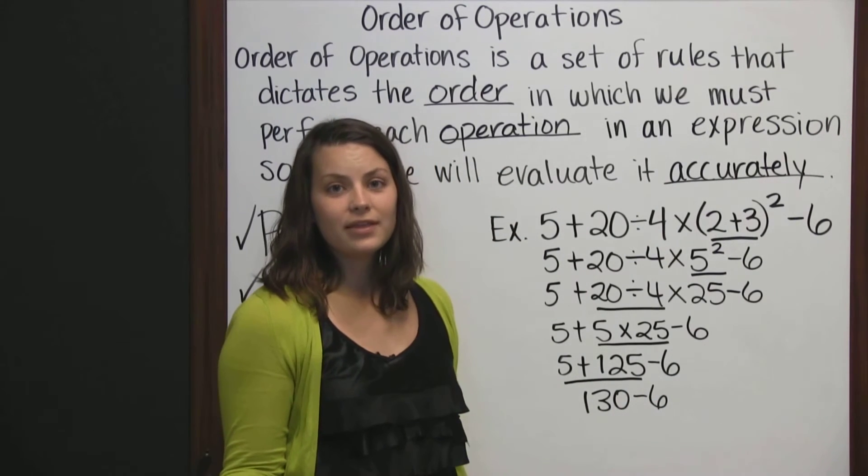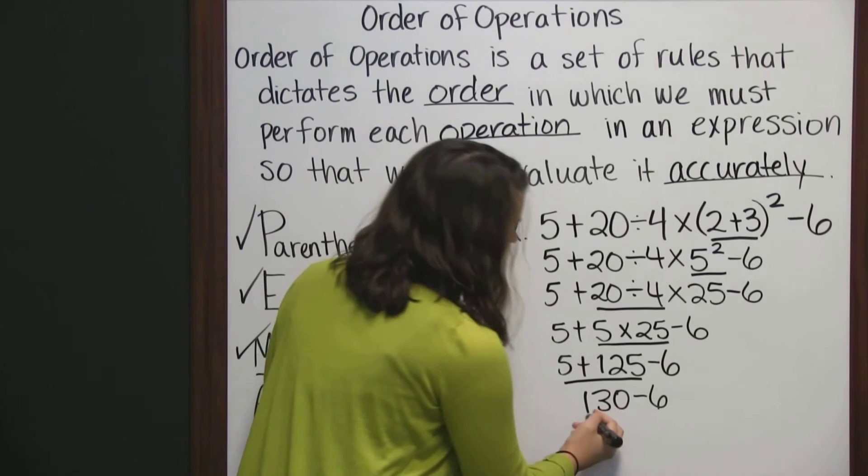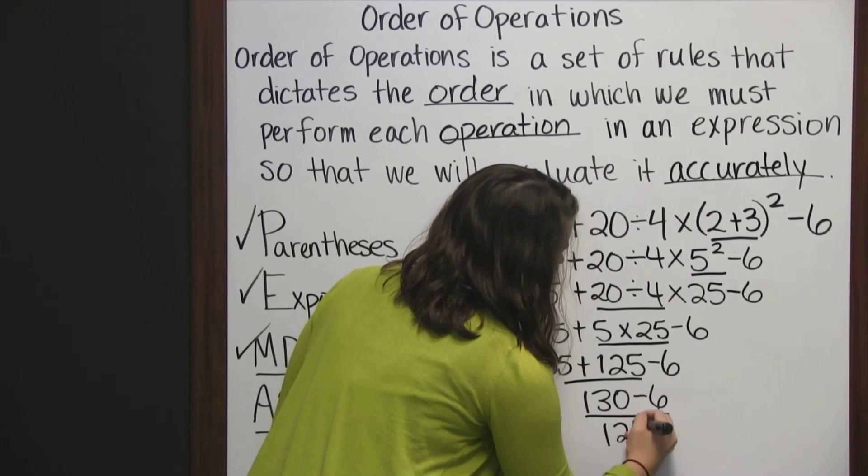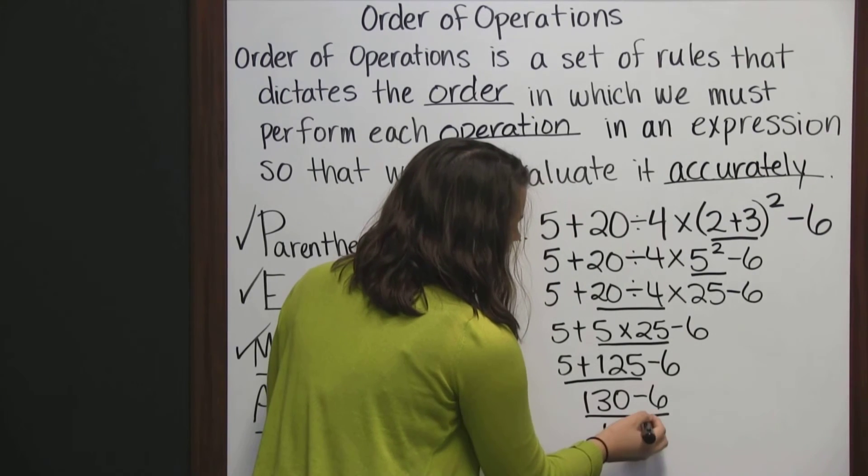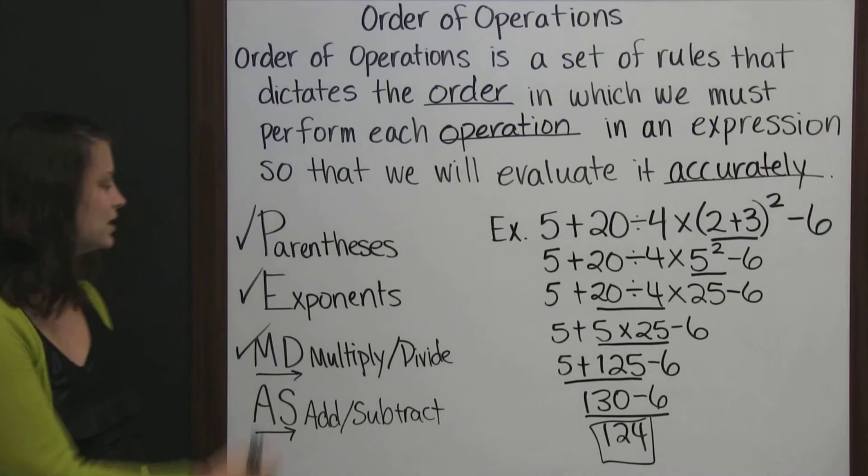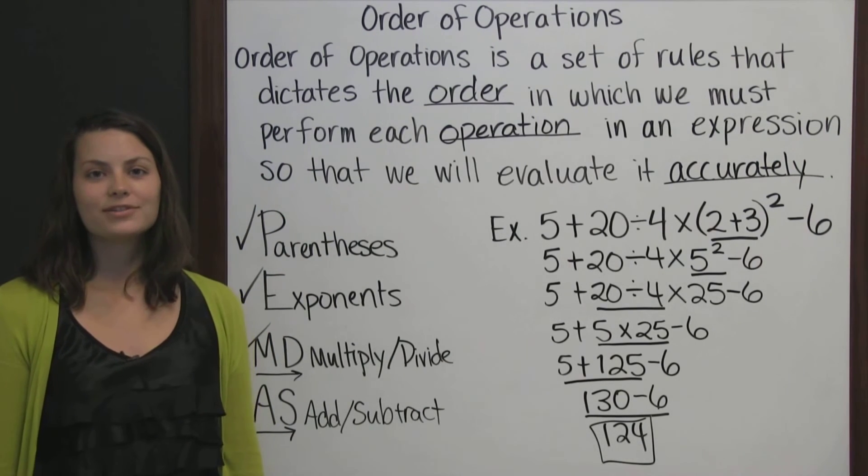And then we do the only thing left to do. Subtract. 130 minus 6 is 124. And finally we've evaluated our expression using the order of operations or PEMDAS.